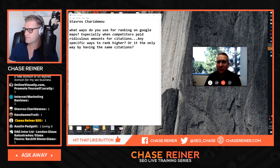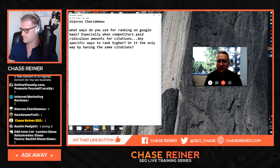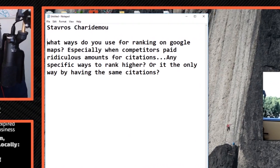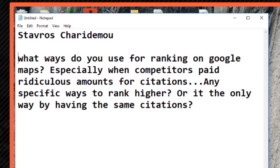We have a great question from Stavros — I don't know if I'm pronouncing that right — around local search. The question is: what ways do you use for ranking on Google Maps, especially when competitors paid ridiculous amounts of citations?